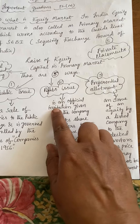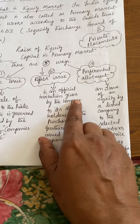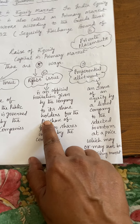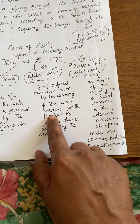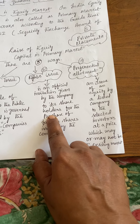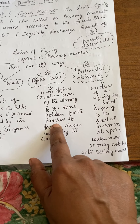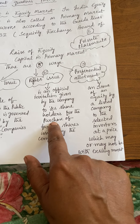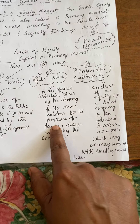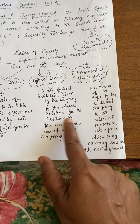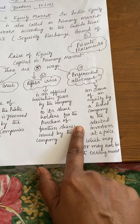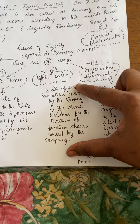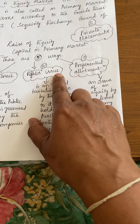The second method is the rights issue. In this method, an official invitation is given by the company to its existing shareholders. For example, if I already hold a thousand shares of that company, and there are around 5,000 individual shareholders, the company invites those shareholders to purchase newly issued shares as well. Giving this information to that particular group of people is called a rights issue.